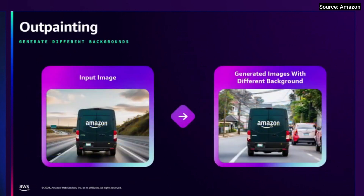Out-painting uses an input image of an Amazon truck on a highway. Now we want to change that into a different background, very simply by prompting it. And now you have the Amazon truck on a street.